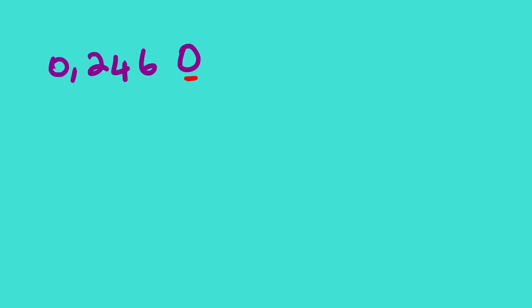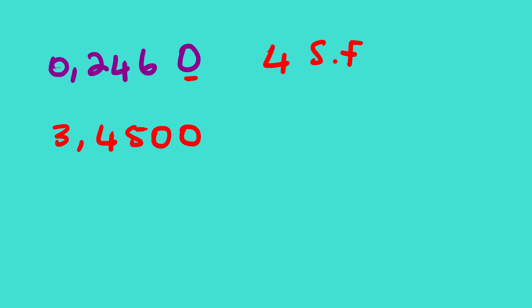For 0.2460 — we have a decimal point, so we are going to count the trailing zero. The leading zero we do not count since it is at the beginning, so we have four significant figures. For 3.4500 — the zeros are not at the beginning, they are at the end with a decimal point present, so we count them: one, two, three, four, five — five significant figures.